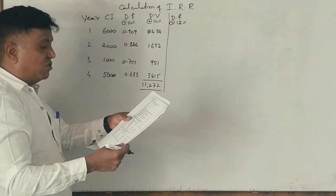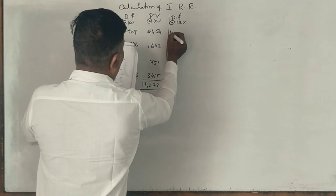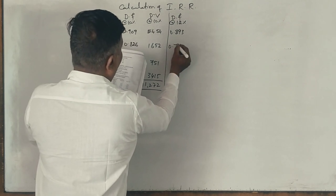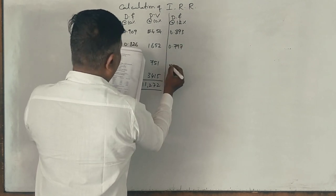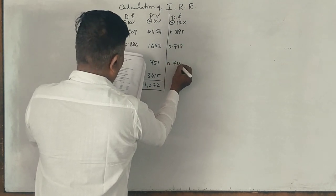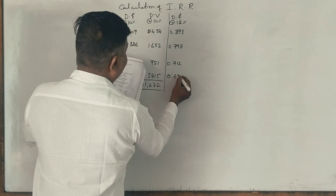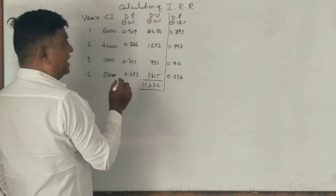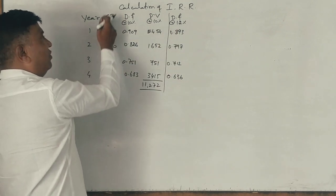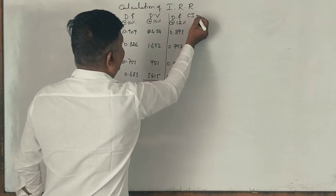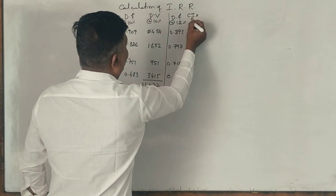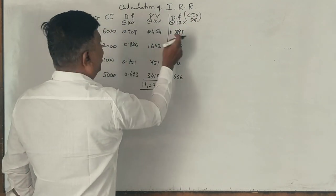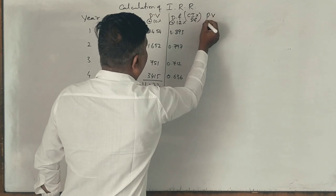Now this is for 10% is over. Now let me take discount factor at 12%. What is given in the discount factor is 0.893, 0.797, 0.712, 0.636. Correct. Now this discount factor, cash inflow into multiplier, cash inflow into discount factor.